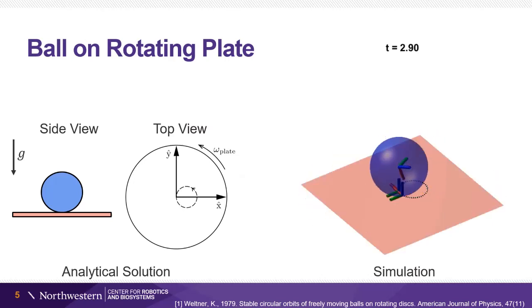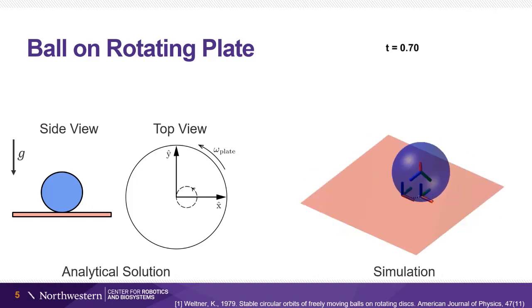Our simulation shows the blue ball following a circular trajectory on the rotating plate. The results match the analytical trajectory, whereas physics simulators that do not explicitly model rolling have drift over time.